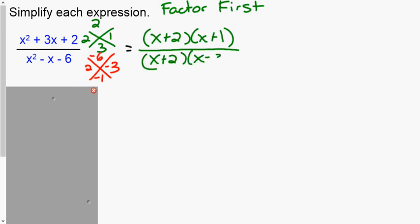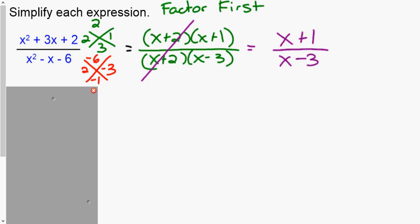I'm going to stick to giving you ones that are diamond-done for the factoring part. You can put the diamond out front — I don't care where you do your diamond; you just need to show your diamond any time you have a trinomial. Once you've factored, check for matching binomials: (x + 2) and (x + 2) cancel. (x + 1) and (x − 3) don't cancel, so those remain. x squared + 3x + 2 divided by x squared − x − 6 simplifies to (x + 1) over (x − 3).